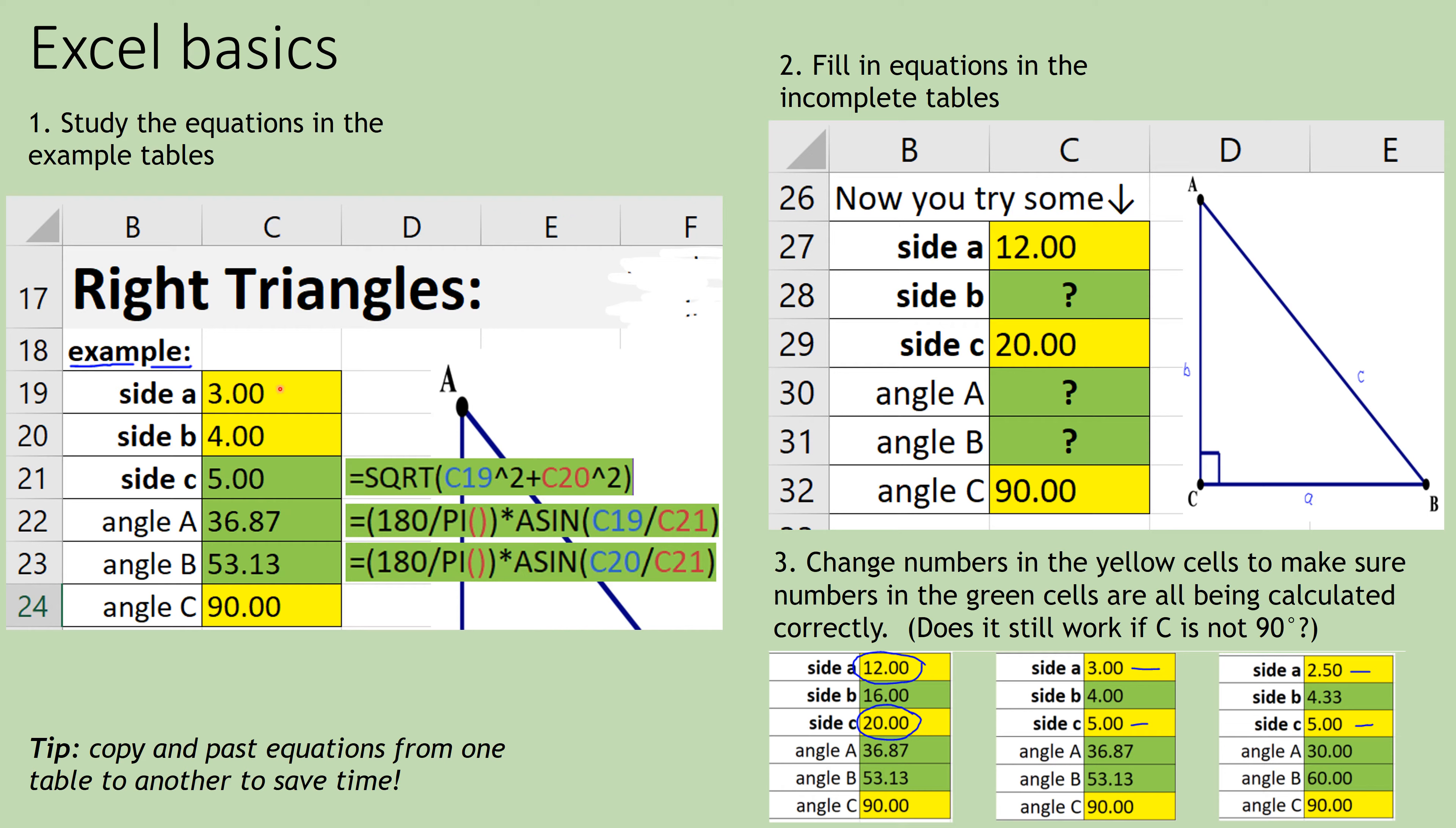And then once we have the lengths of all the sides of the triangles, we can go ahead and calculate the angles. Remember that Excel uses radians instead of degrees. So we're going to have to convert back to degrees if that's what you're more comfortable with. Here's our arc sine. And remember SOH CAH TOA. Sine is opposite over hypotenuse. So if I want angle A, we're looking at here. Angle A, that's going to be the arc sine of this opposite side A divided by C. So we have arc sine C19. That's A divided by C21. That's our hypotenuse. So that gives us that angle at the top over here. And then very similar thing for B. So just look through the example table and see what equations they're using.